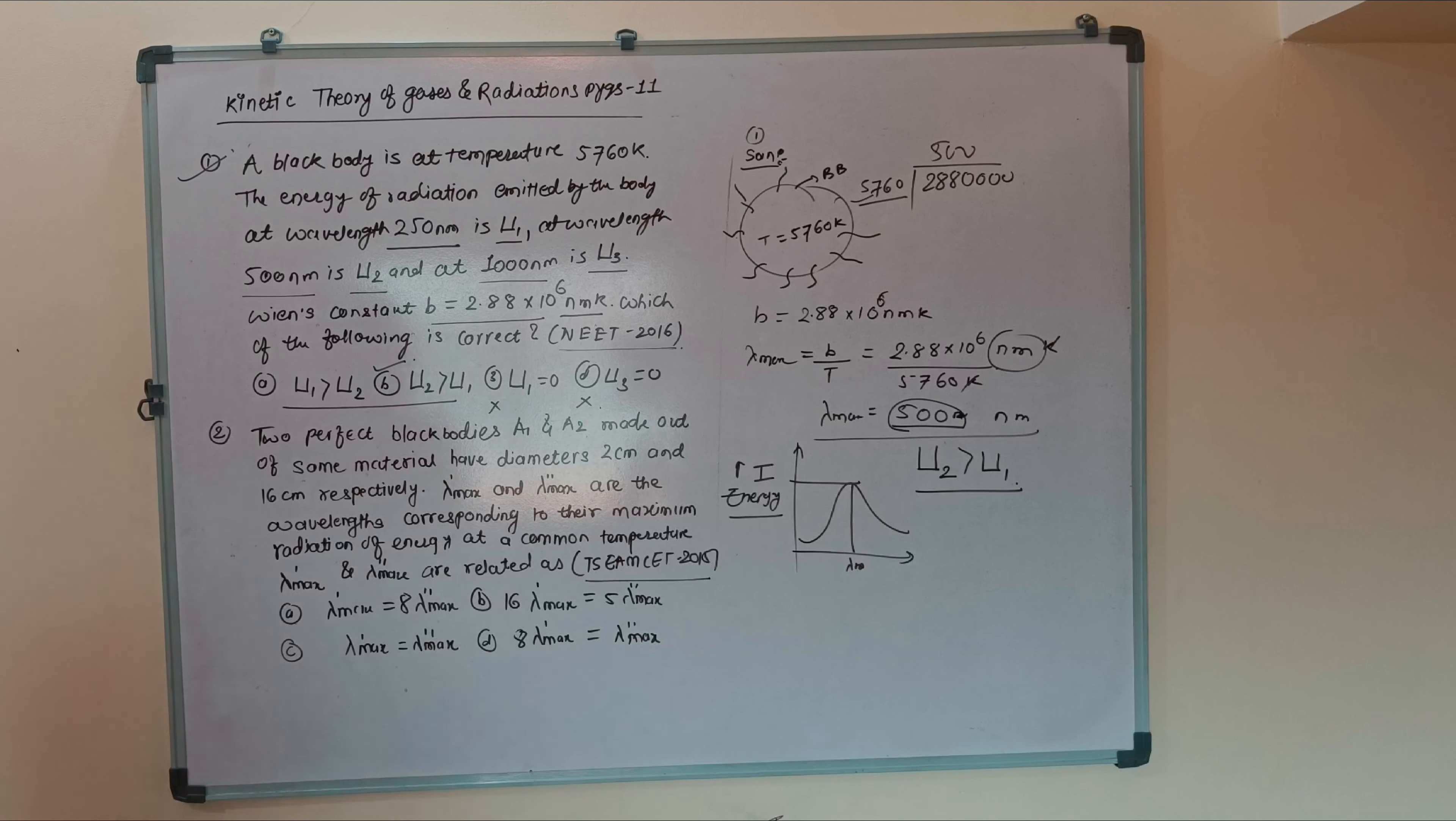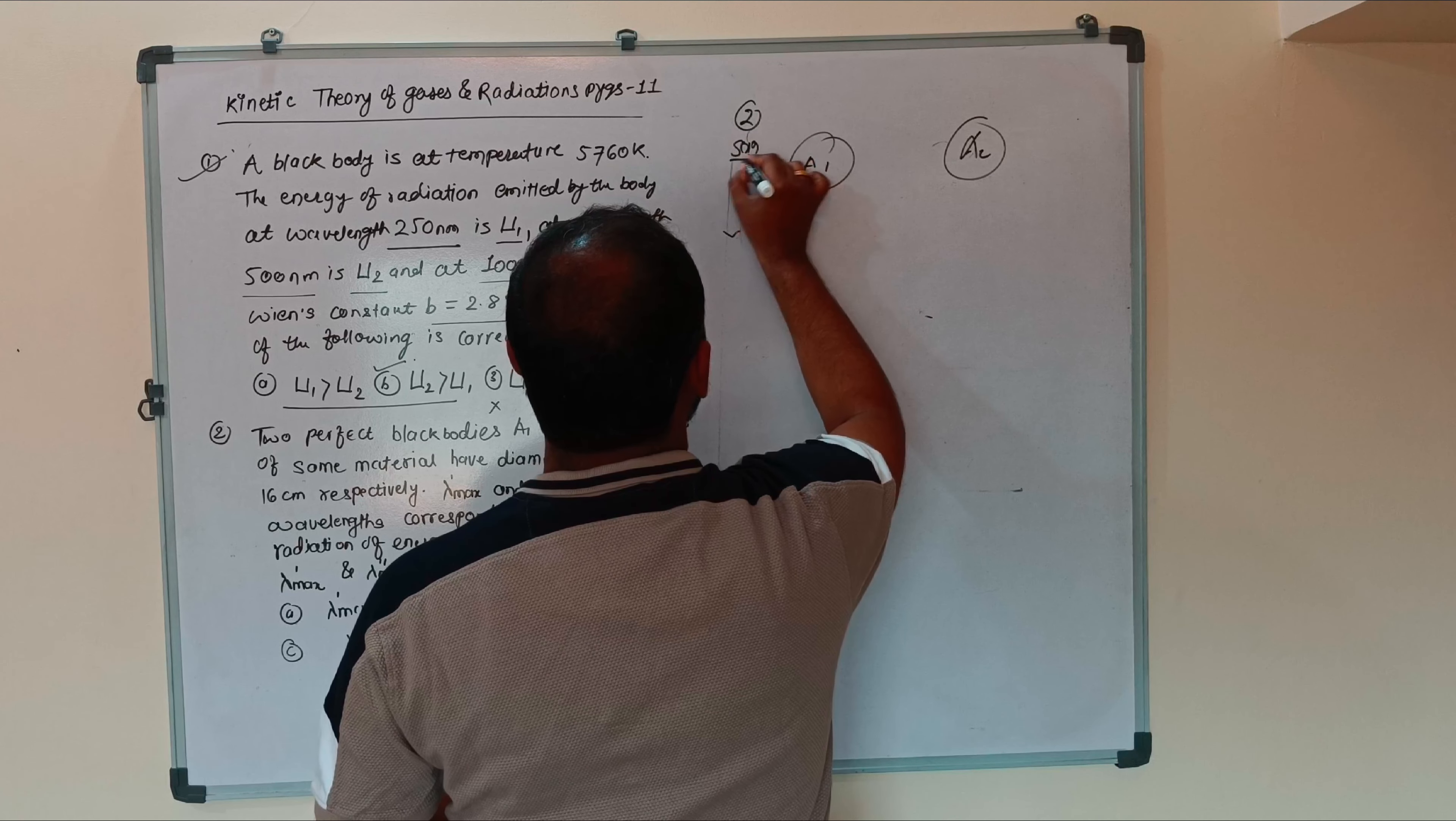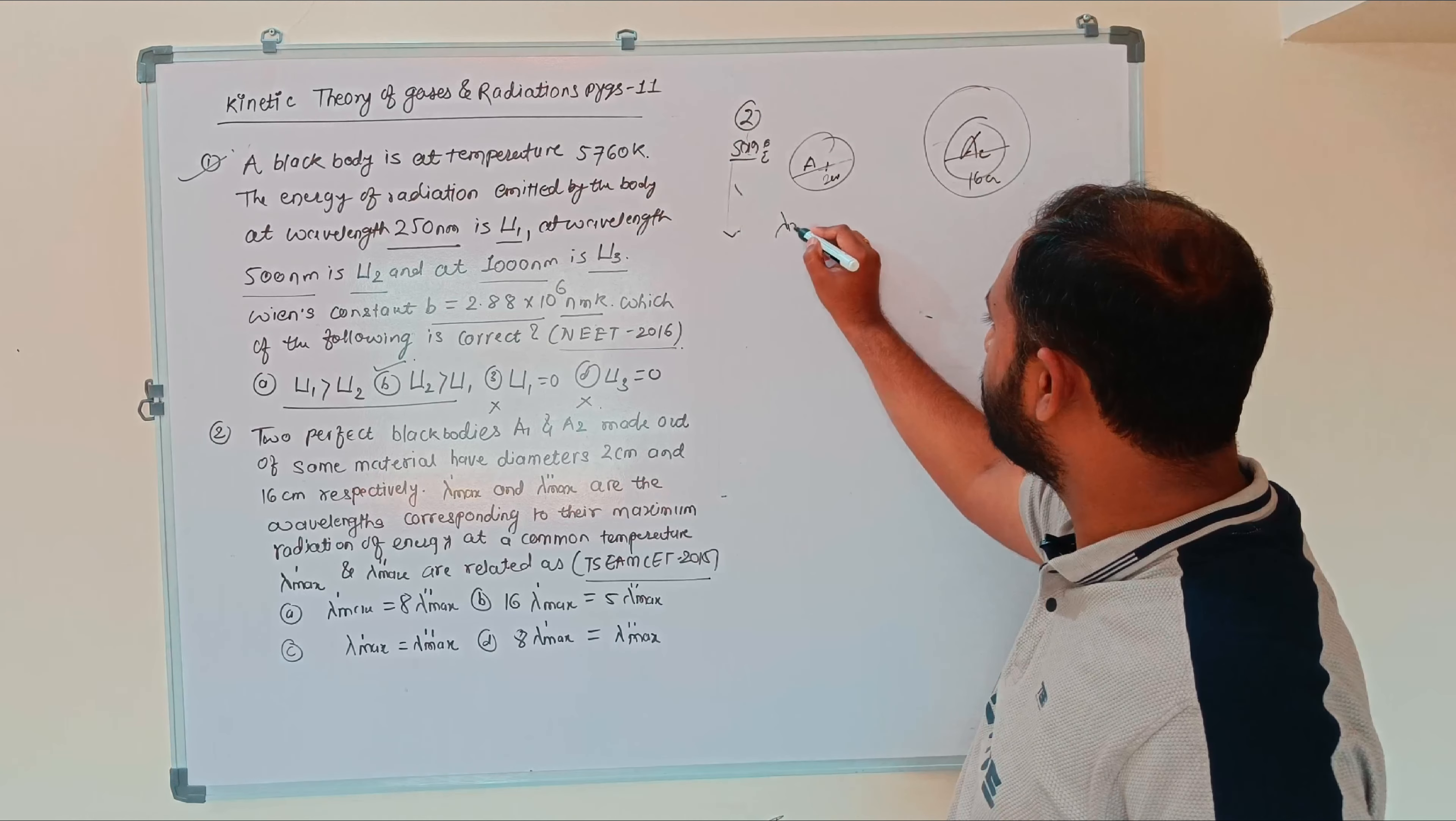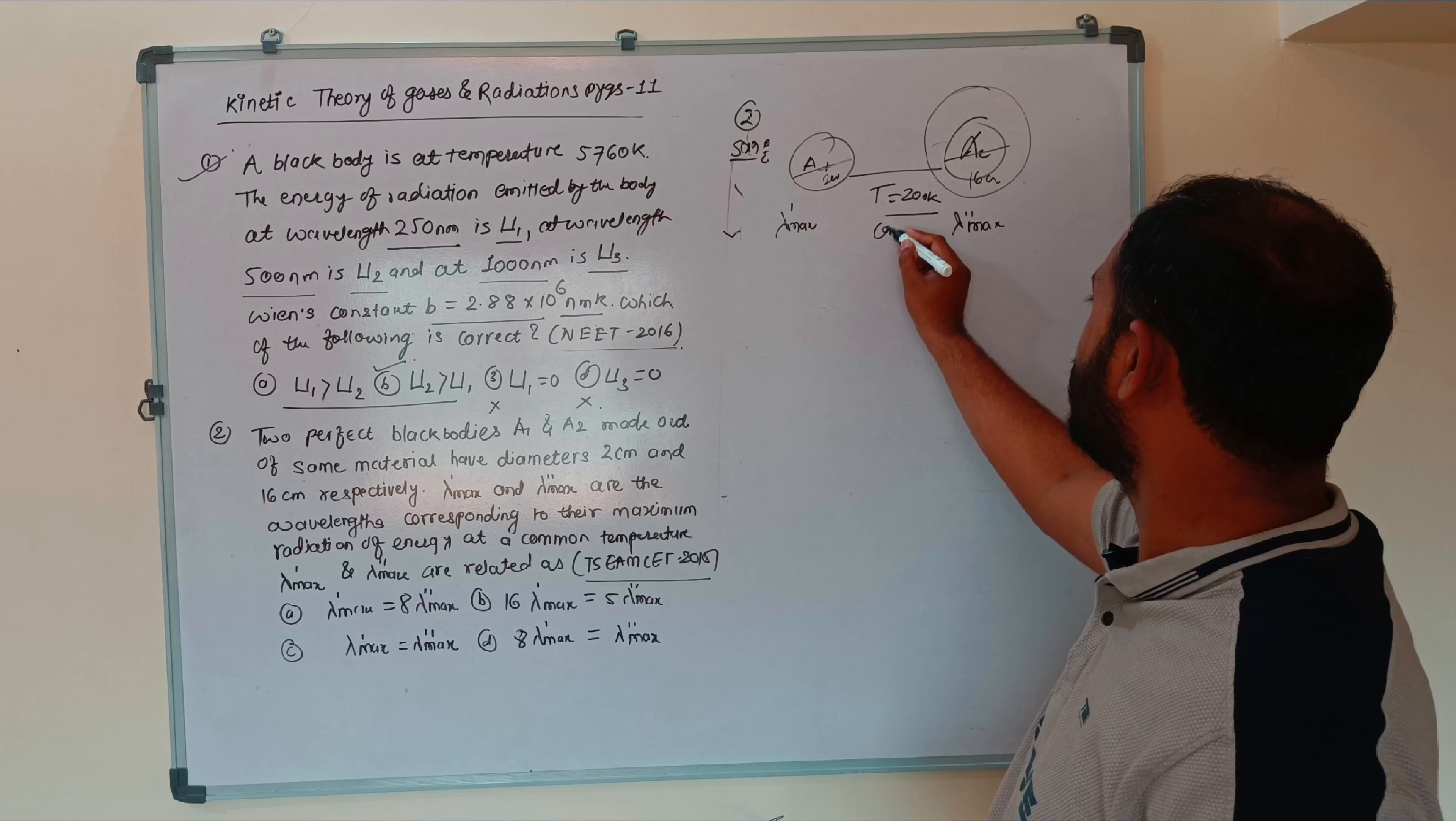Second numerical: There are two perfect blackbodies made out of the same material. They have diameters D1 equals 2 centimeter and D2 equals 16 centimeter. Lambda max prime and lambda max double prime are the wavelengths corresponding to their maximum radiation of energy at common temperature. Both are at the same constant temperature.